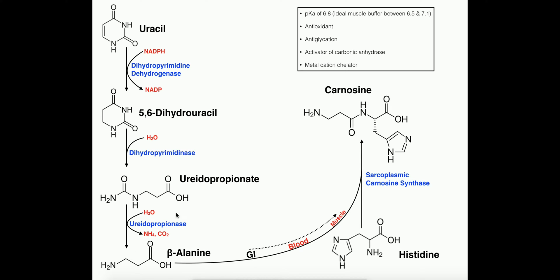Uracil is first reduced by this enzyme called dihydropyrimidine dehydrogenase. The double bond on the left side of uracil is ultimately going to be reduced with hydrogen from NADPH - we get NADP out of it - and then this molecule called 5,6-dihydrouracil.